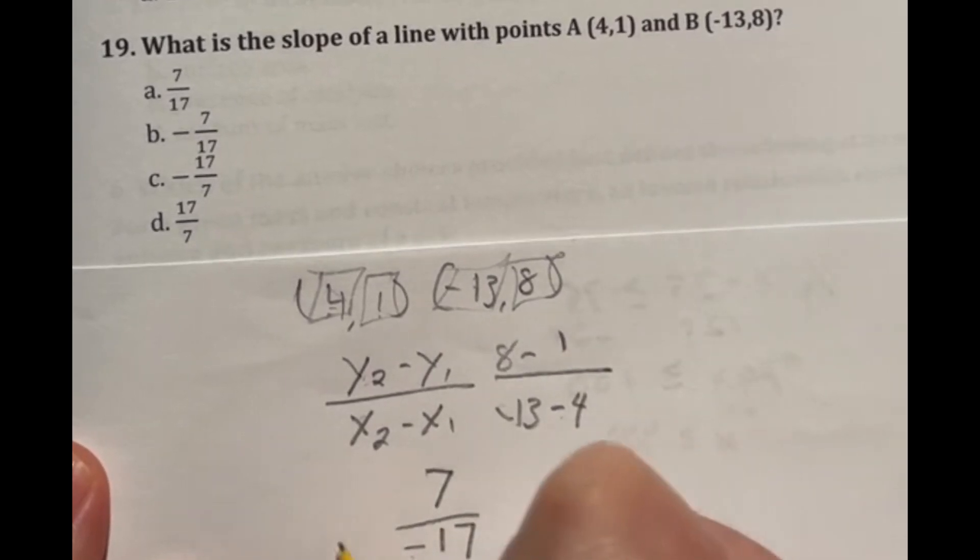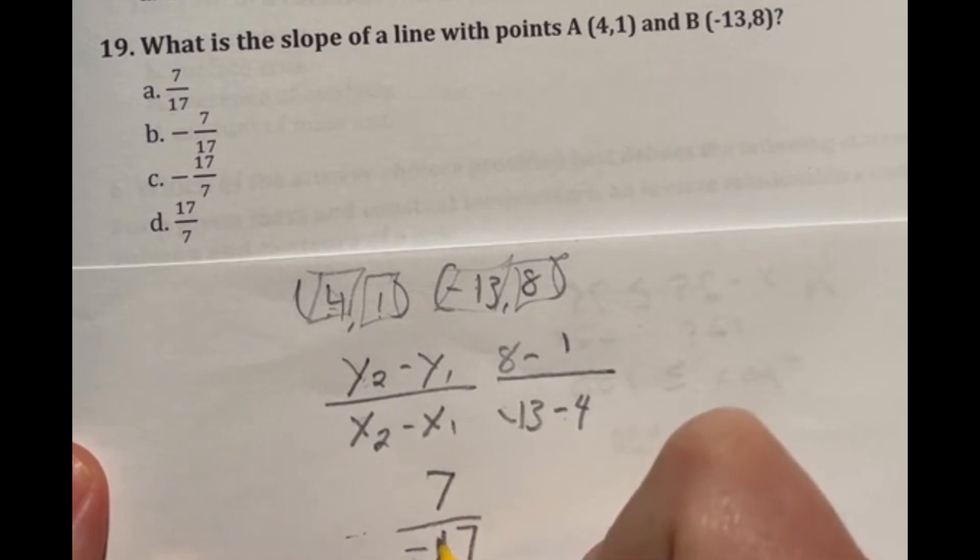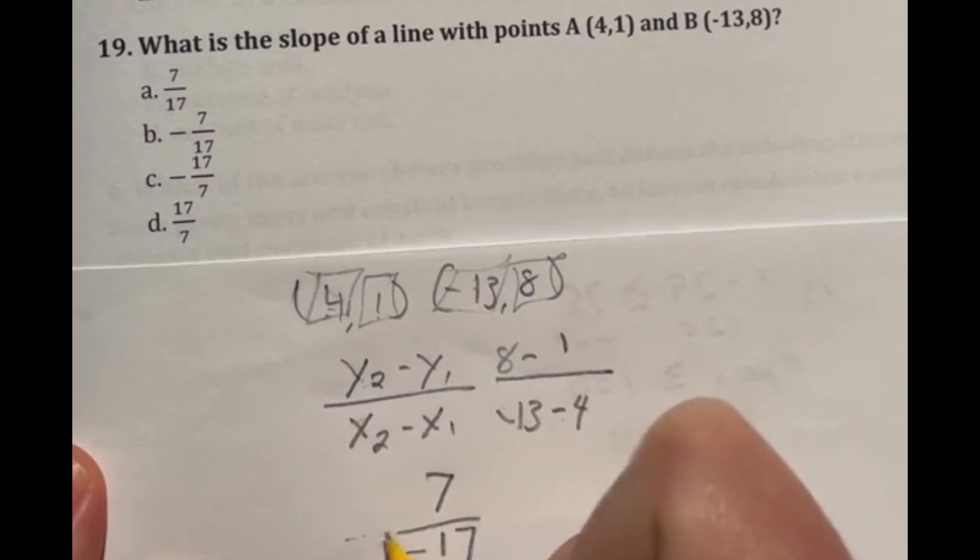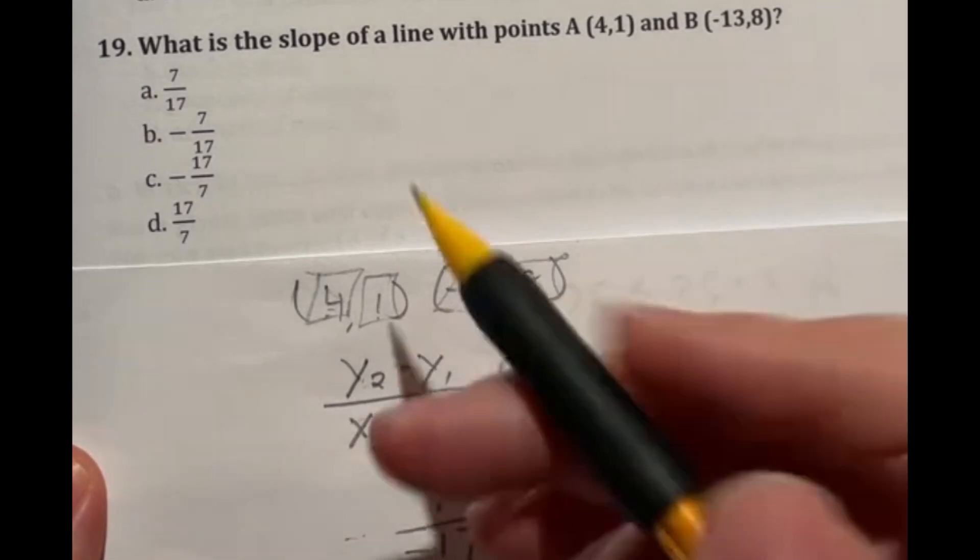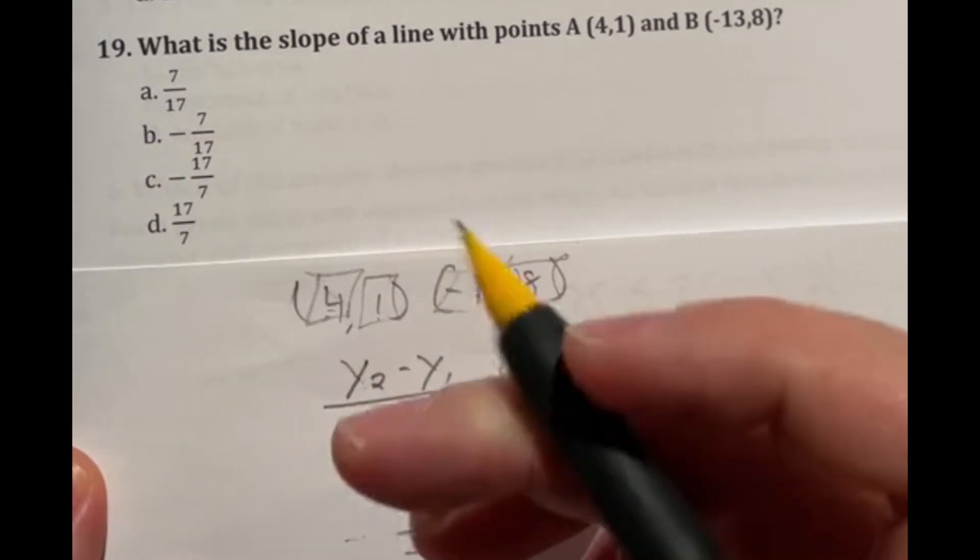Now remember, if you have a negative, you can just pull that out front. If you have a negative on the top and bottom, they will cancel out to become a positive. So our final answer here should be negative seven over 17. So if I look at my options here, it looks like that is option B.